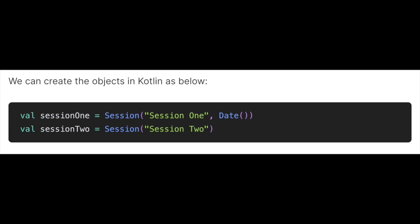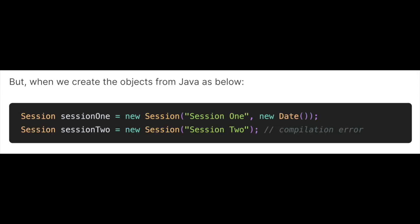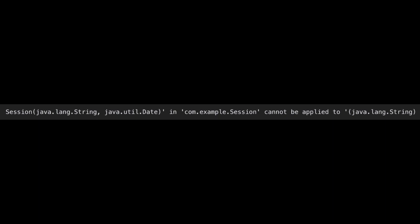For the second object, it will take the default value of the date. But when we want to create the objects from Java — session1 with new Session and a new Date works, but for session2 where we are not passing the date value, the first line will compile but the second line will not compile because we haven't passed the date as a parameter.